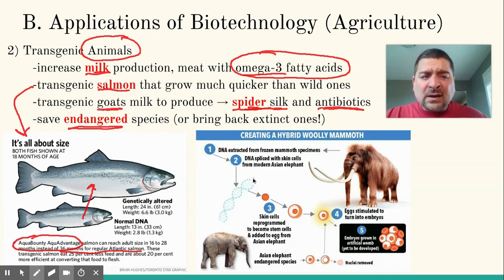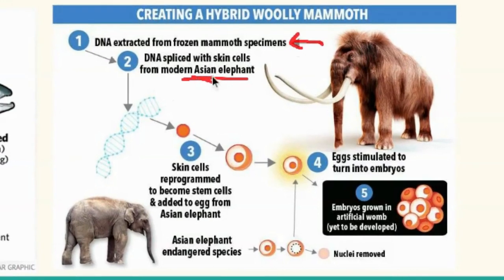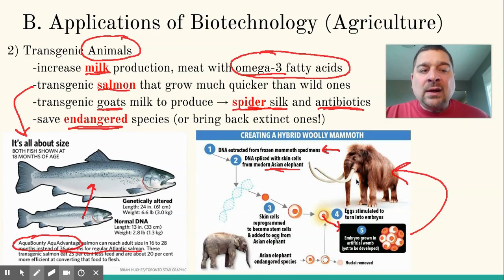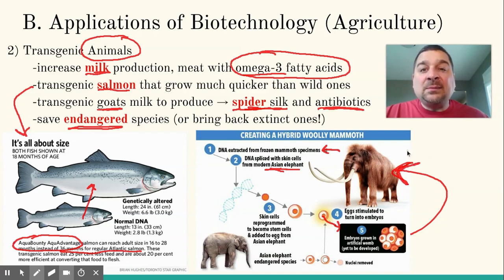There's even a possibility of bringing back endangered species. We're finding frozen woolly mammoths in Siberia — could we take DNA from a woolly mammoth, splice it with a modern Asian elephant, and reprogram those cells to grow into a woolly mammoth? Could we bring things back from extinction? At the time of this recording, there are only two northern white rhinos left in Africa and the last male has died. But if we preserve their DNA, is there a way we could possibly clone them to prevent extinction?